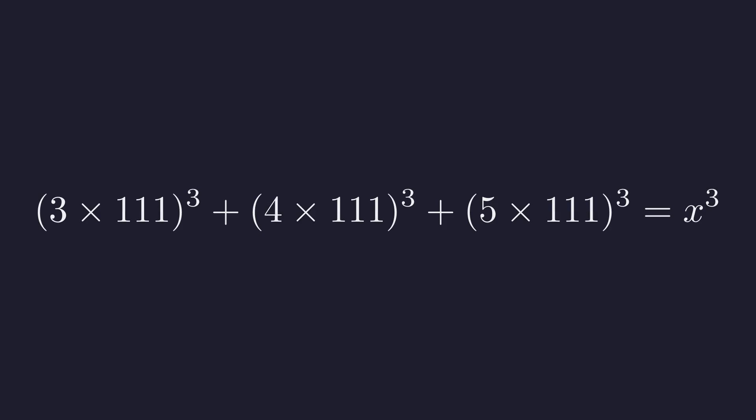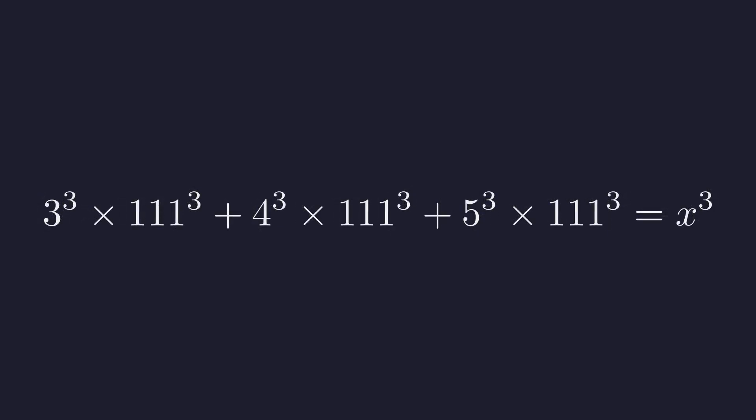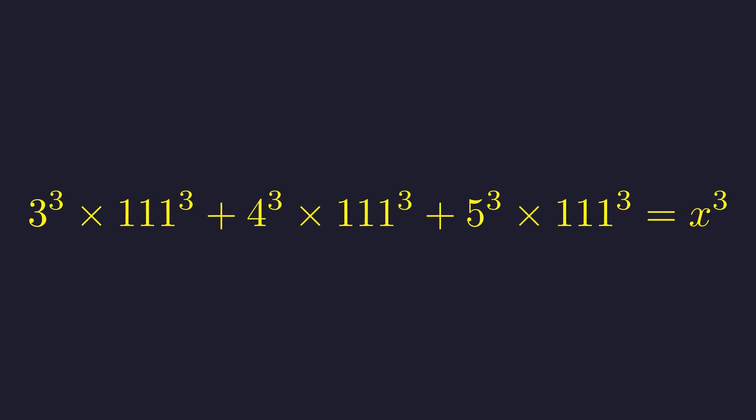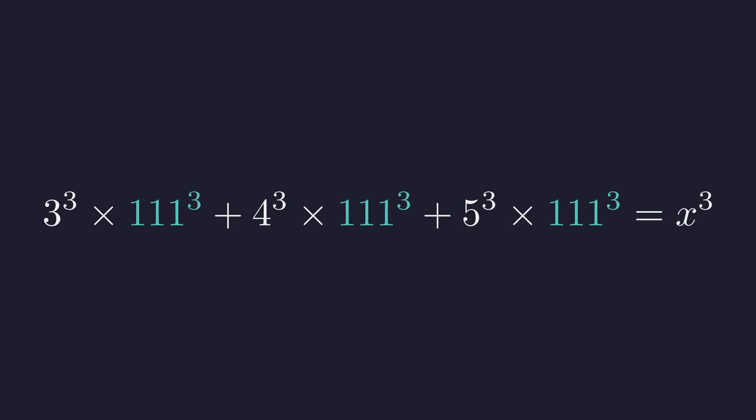So let's apply this power rule to each term in our equation. We can break apart each of these cubed products. This gives us 3 cubed times 111 cubed plus 4 cubed times 111 cubed plus 5 cubed times 111 cubed. And now, something interesting starts to emerge. Do you see what's happened? Every single term on the left side has 111 cubed as a factor.